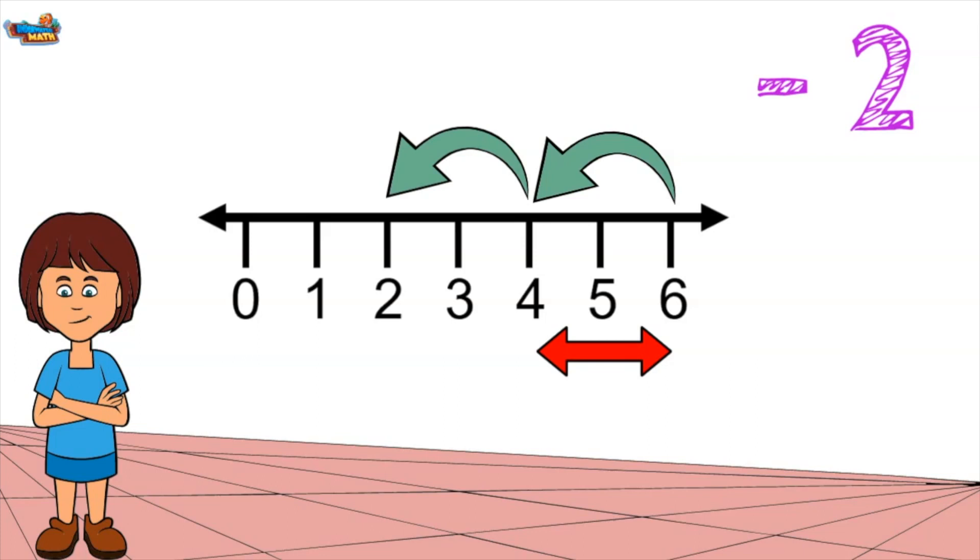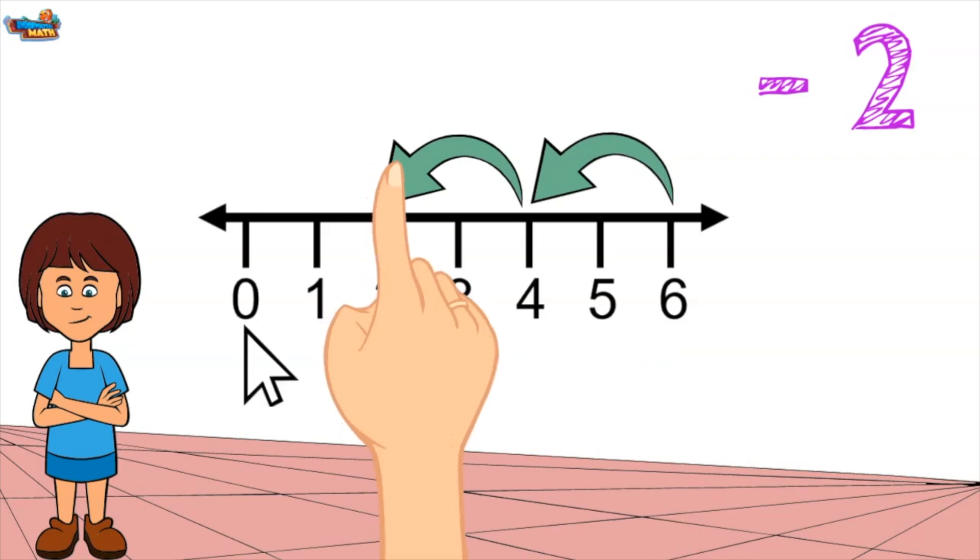To find the next number in the pattern, we need to apply the rule. We start at 2 and subtract 2. The next number in the pattern is 0.